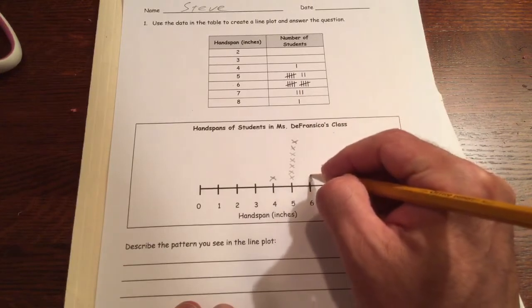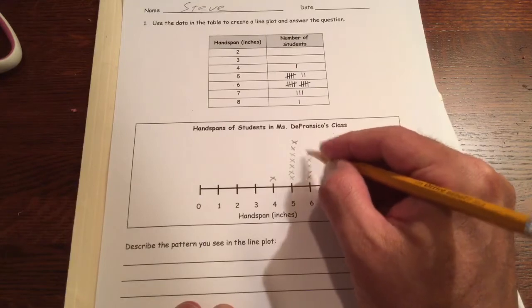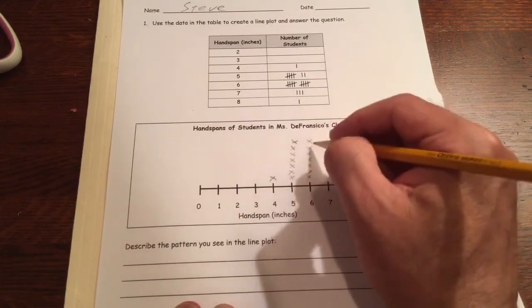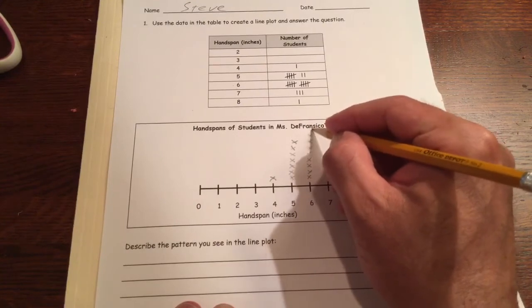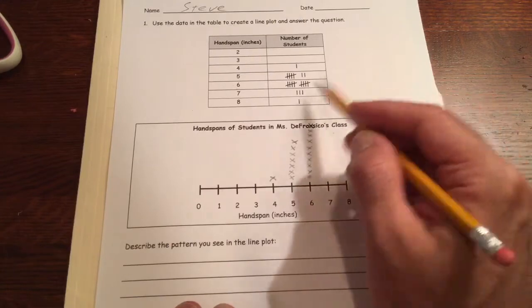We need ten X's, so one, two, three, four, five, six, seven. So these are tied at seven but this one goes up to ten. Eight, nine, ten. It's gonna go up into the title. Couldn't help it.